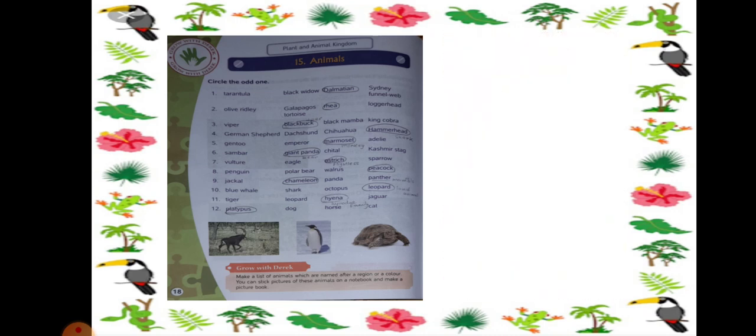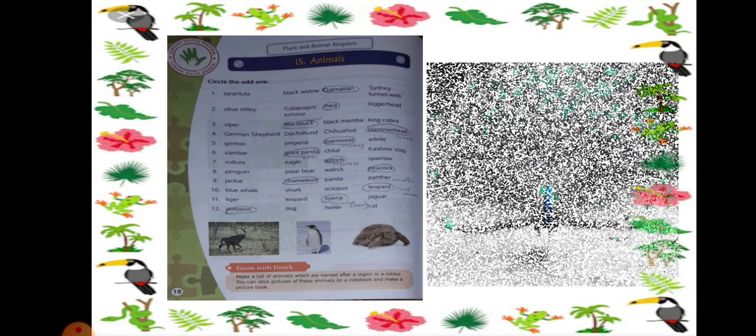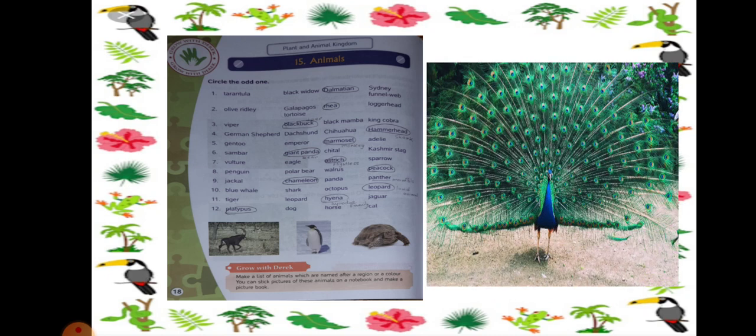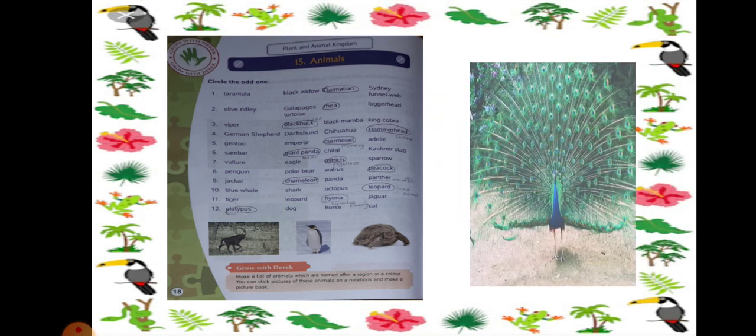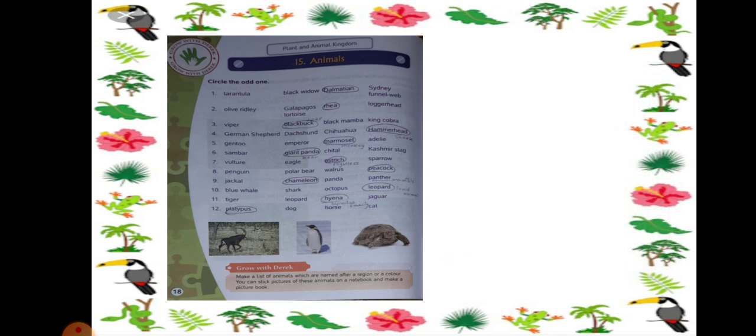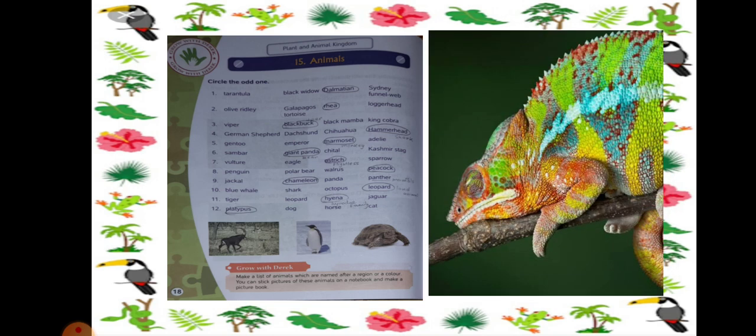Number 9: Jackal, Chameleon, Panda and Panther. So here you see that the rest are all mammals and Chameleon is not a mammal. So Chameleon should be separated. This is a picture of a chameleon. You can see how it changes its skin color according to the background.